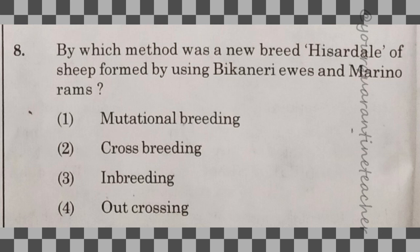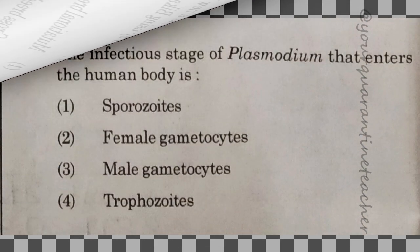8th question: by which method was a new breed, Sardile of sheep, formed by using Bikaneri ewes and Merino rams? This is a direct question — cross breeding. The answer is option 2.